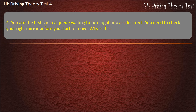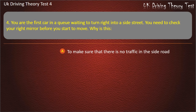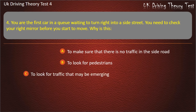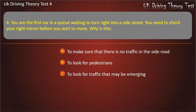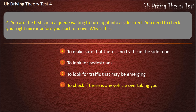Question 4. You are the first car in a queue waiting to turn right into a side street. You need to check your right mirror before you start to move. Why is this? To make sure that there is no traffic in the side road; to look for pedestrians; to look for traffic that may be emerging; or to check if there is any vehicle overtaking you. Answer: To check if there is any vehicle overtaking you.